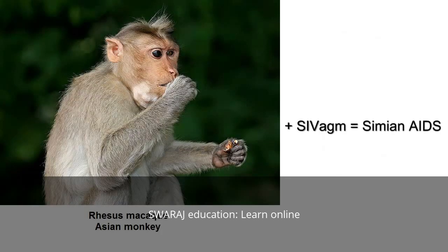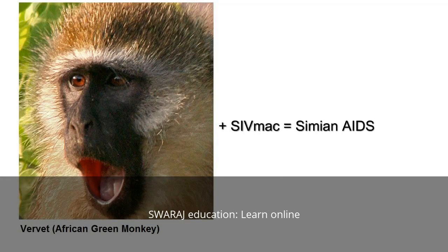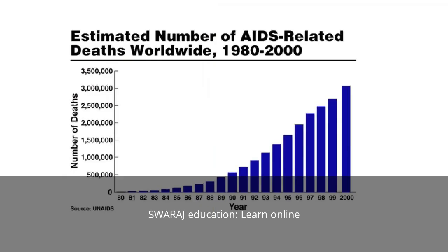However, if you take a rhesus macaque, a monkey from Asia, and infect it with the SIV from the African monkey, or if you infect the African monkey with the Asian virus, the result is called simian AIDS, and it parallels what we see in humans. This observation led scientists to suspect that HIV has not been a human virus for very long. If it was a virus with a lot of history with humans, it's unlikely that it would still be so pathogenic.